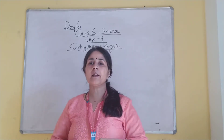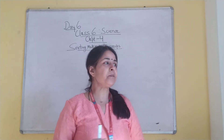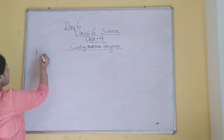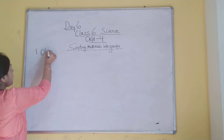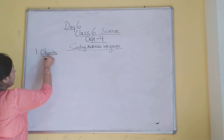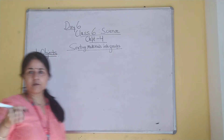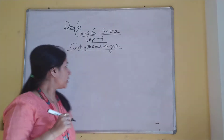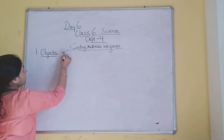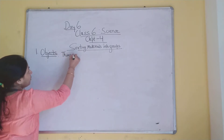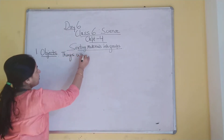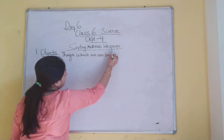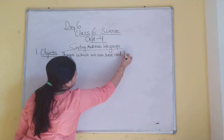Starting with the first topic — we began the chapter with the definition of objects. I won't be writing it, just revising. Objects are things that we can see and touch.